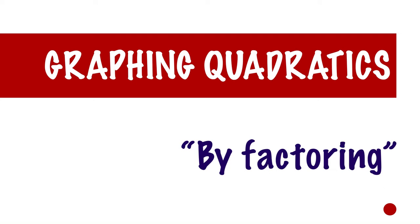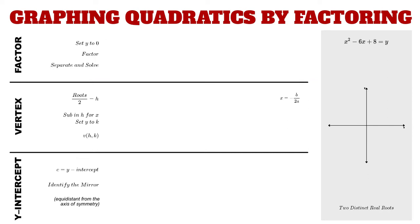Graphing quadratics by factoring has three main steps: first is to factor, then we're going to find the vertex and use the y-intercept. By doing these three things we'll have enough coordinates to graph a parabola.